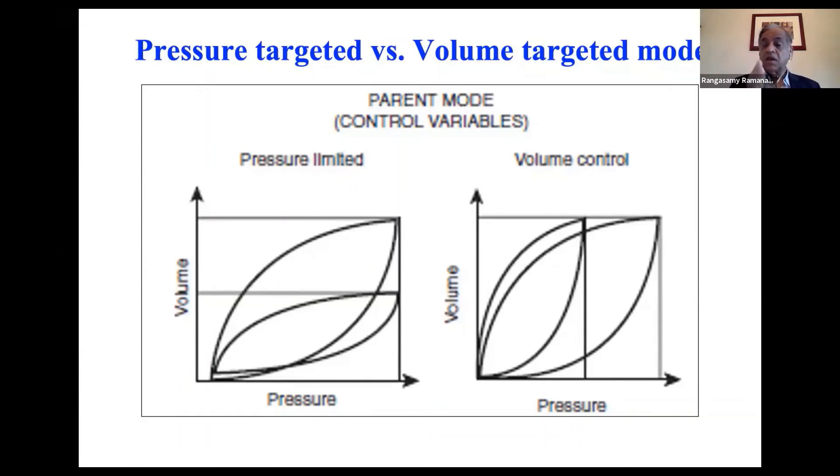This is in acute babies. Chronic babies, like a baby with BPD, who are using volume control mode, you have to increase the limit of pressure to 40.